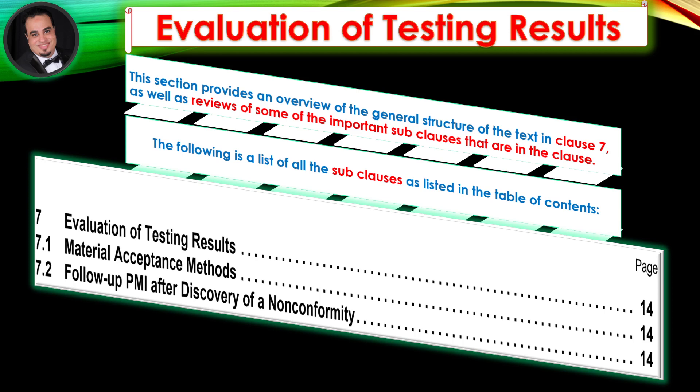The following is a list of all the sub-clauses as listed in the Table of Contents. The text portion is distributed amongst two sub-clauses. In the following slides, we highlight important information contained in Clause 7, accompanied by the sub-clauses.